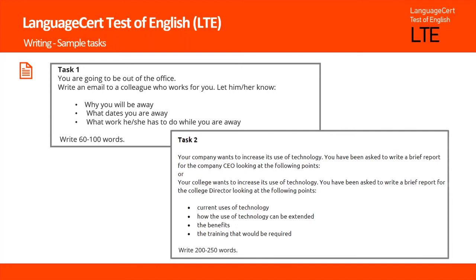The first task asks candidates to imagine that they will be out of their office and need to write an email to a colleague who works for them. They need to share why they will be away, what dates they will be away, and what work they will have to do while they are away. Candidates are required to write between 60 and 100 words.